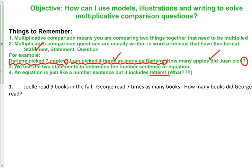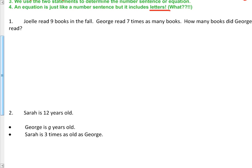So our first example: Joel read nine books in the fall. George read seven times as many books. How many books did George read? So I'm going to circle the important information that we need to know here. Joel read nine books. George read seven times, that's telling you to multiply, as many books as Joel. So how many books did George read? In this case, I'm going to use writing to help me.